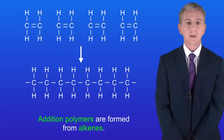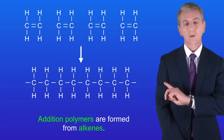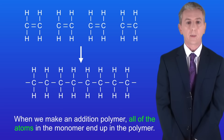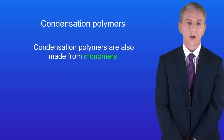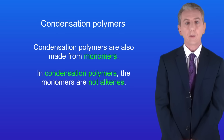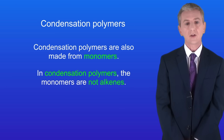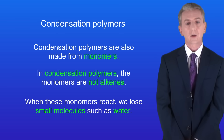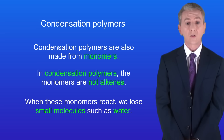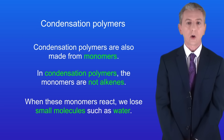In the last video we saw that addition polymers are formed from alkenes. When we make an addition polymer, all of the atoms in the monomer end up in the polymer. Condensation polymers are also made from monomers, however the monomers are not alkenes, and when these monomers react we lose small molecules such as water. So let's take a look at how condensation polymers are formed.